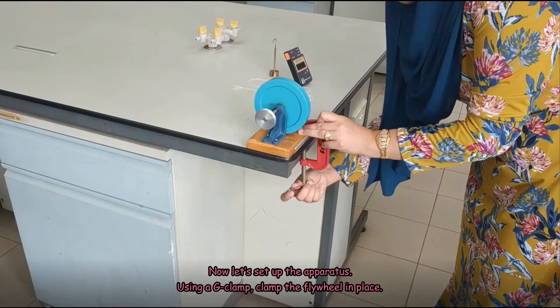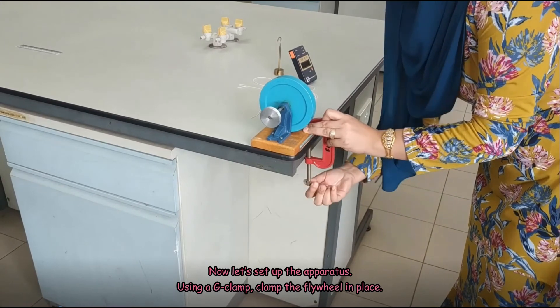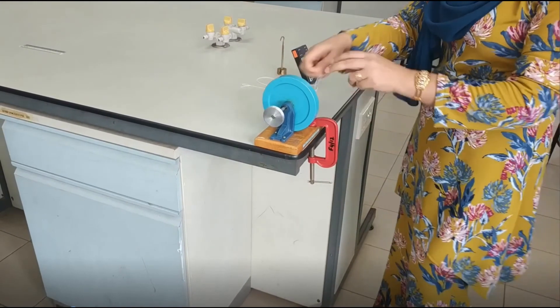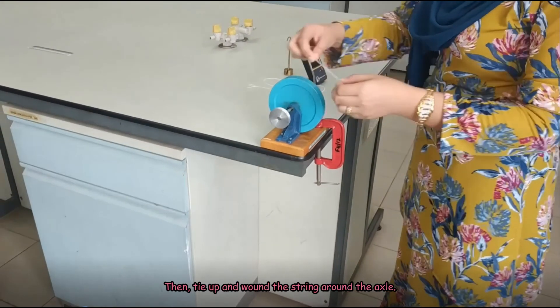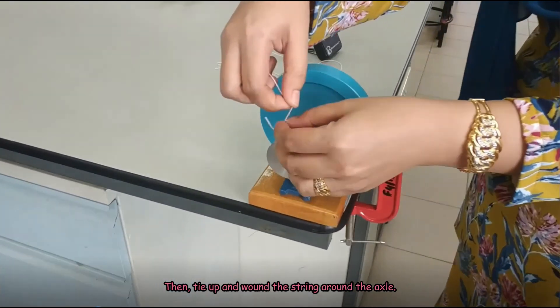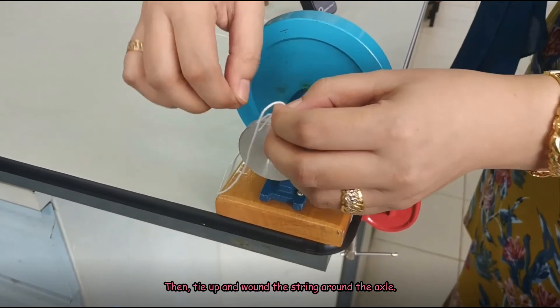Using a G-clamp, clamp the flywheel in place. Then, tie up and wind the string around the axle.